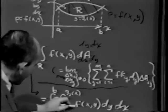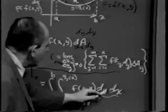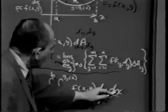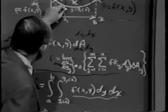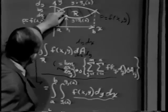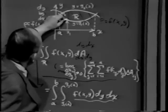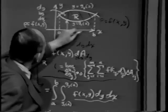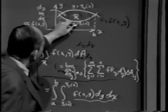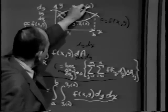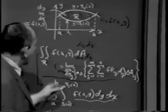Then we add these all up. For a constant value of x — say x₁ — y can vary anywhere in the region R. For that fixed x, y varies continuously from g₁(x) to g₂(x). And x could have been chosen to be any place from A to B. So mechanically, we say: here's the mass of a small element, and we'll add them all up so that for a fixed x, y goes from g₁(x) to g₂(x), and x can be anywhere from A to B.